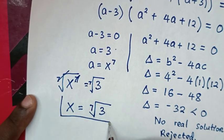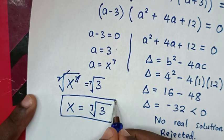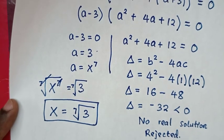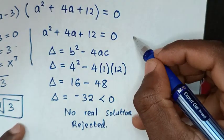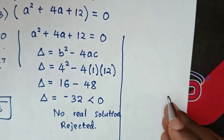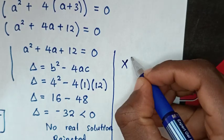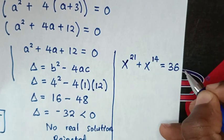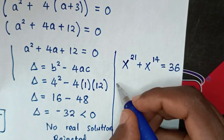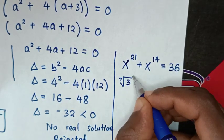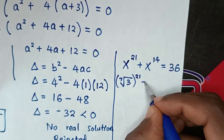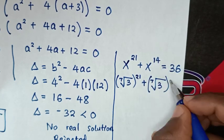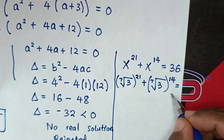Therefore, the 7th root of 3 is the final answer for the value of x. Now, to check if this value is correct — substituting x equals 7th root of 3 back into the original problem x power of 21 plus x power of 14 equals 36: we get bracket (7th root of 3) power of 21 plus bracket (7th root of 3) power of 14. Is it equal to 36?